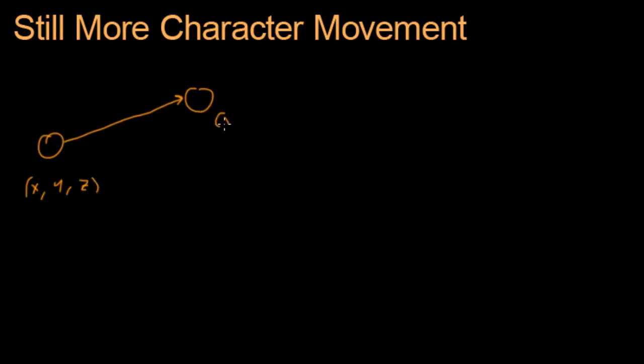We want to move it over there, x prime, y prime, z prime. And we did that by adding a vector to it, vector v. We moved it from here to there.